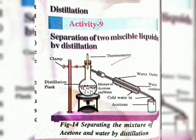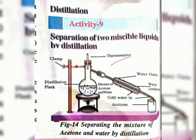Next, attach the condenser to one side of the flask. On the other side of the condenser, keep a beaker to collect the distillate. One side of the condenser is attached to the flask on the left, and on the right side, the outlet leads downward where the beaker is placed.